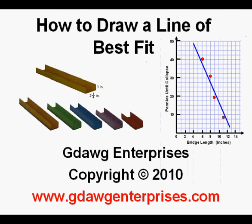With this hand-drawn line of best fit and the equation it made, we can use it to make predictions. In this case, how many pennies it would take to collapse bridges of different lengths. This has been how to draw a line of best fit. Thanks for viewing.